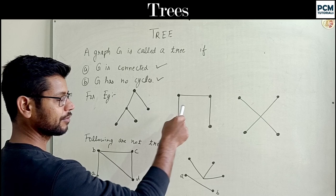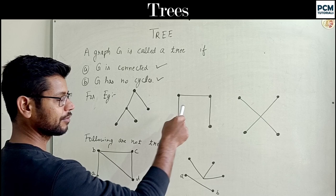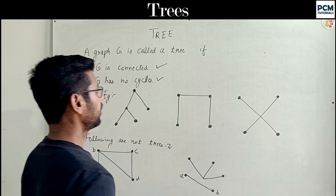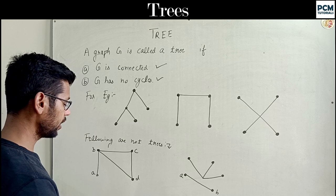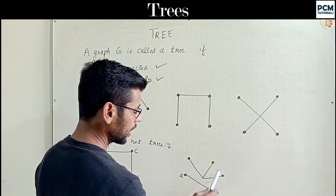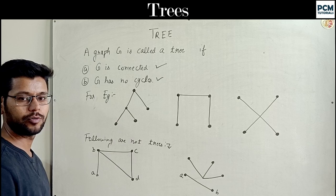Why do we call them trees? First of all, they are all connected graphs, and second, there are no cycles. In this case, these are all trees. But these graphs are not trees — because there is a cycle. In another case, there is an upper part and a lower part; these two parts are disconnected. So our condition is false.